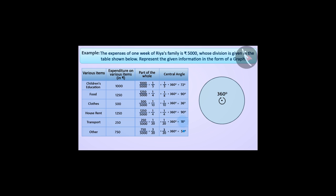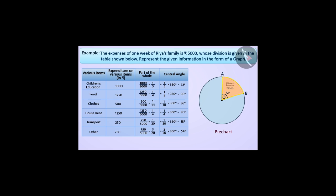Similarly, we will find the central angle for all the items. Now we will draw the circle graph, which means the pie chart. To draw the pie chart, first we will draw a circle. Using a protractor, we will draw angle AOB equals 72 degrees — the resulting sector will denote expenditure on children's education. Similarly, angle BOC equals 90 degrees, angle COD equals 36 degrees, angle DOE equals 90 degrees, angle EOF equals 18 degrees, and angle FOA equals 54 degrees, denoting expenditure respectively on food, clothing, house rent, transport, and others. Thus, we have drawn the pie chart.